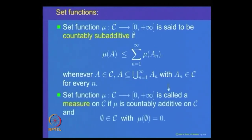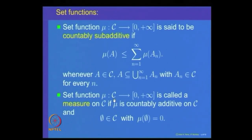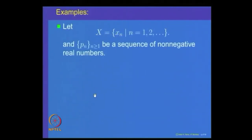A set function mu is called a measure on C, where C is a collection of subsets, if mu is countably additive, the empty set belongs to C, and mu(∅) = 0. So mu is defined on a collection C of subsets and we want: the empty set should belong to C, mu of the empty set should be 0, and mu on this collection should be countably additive. Such a set function is called a measure on C.